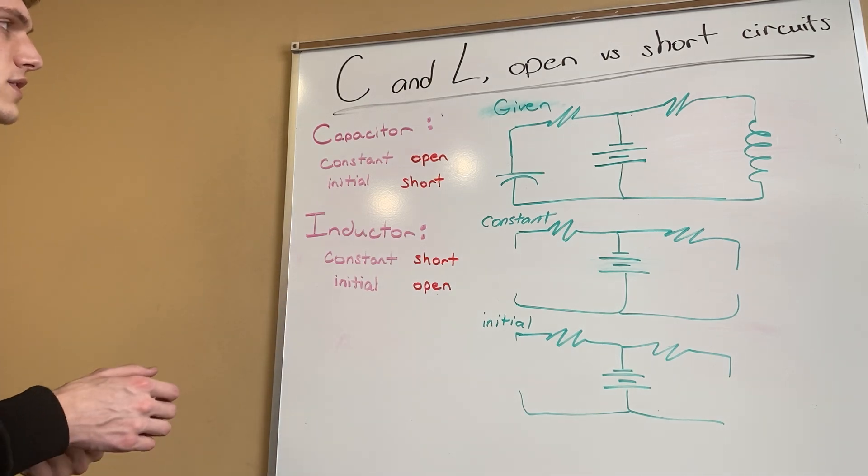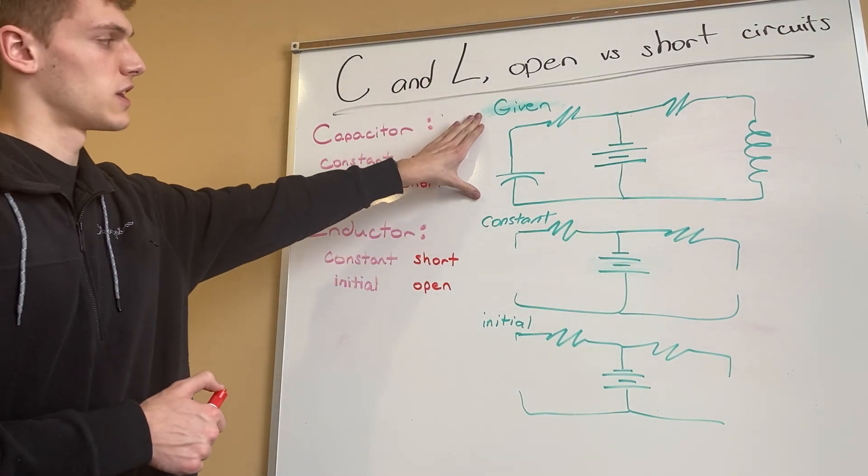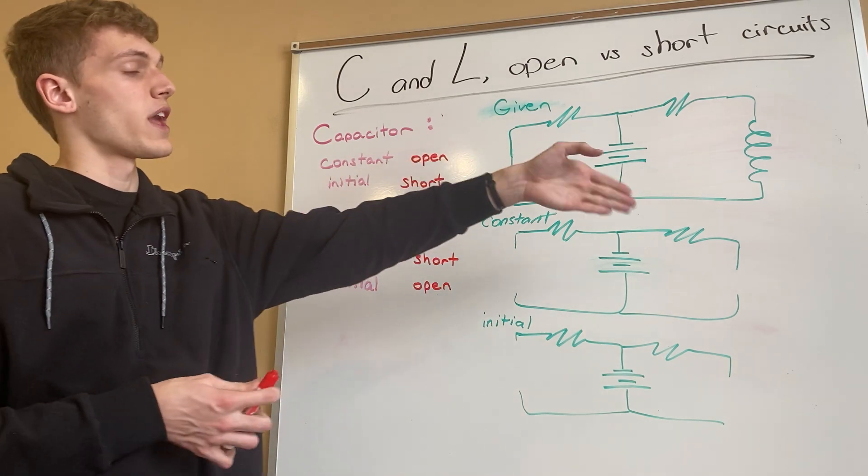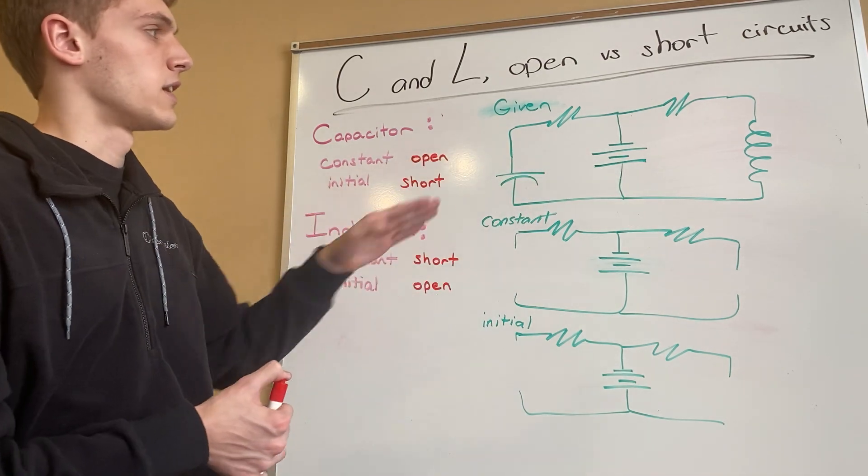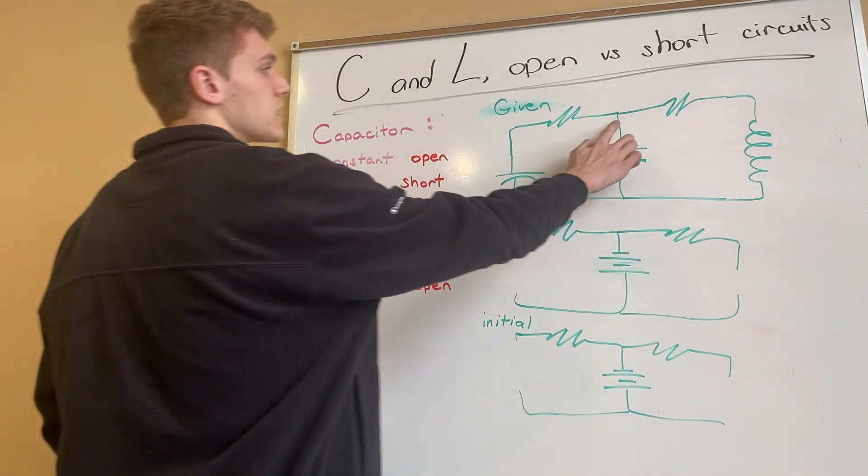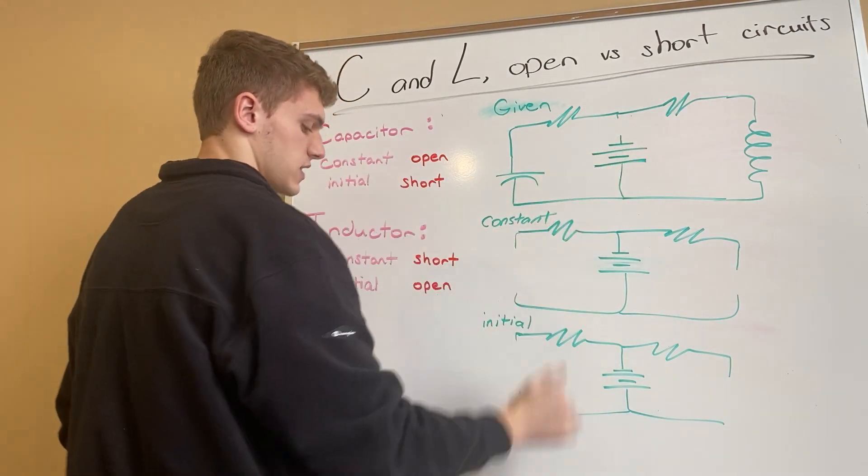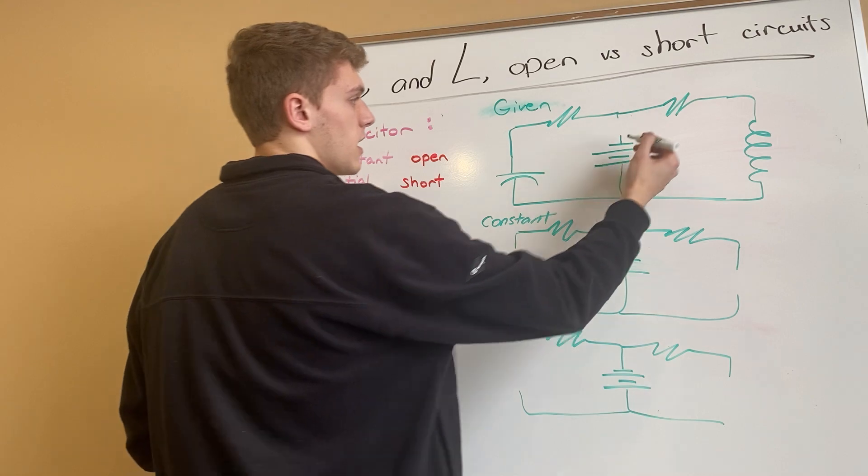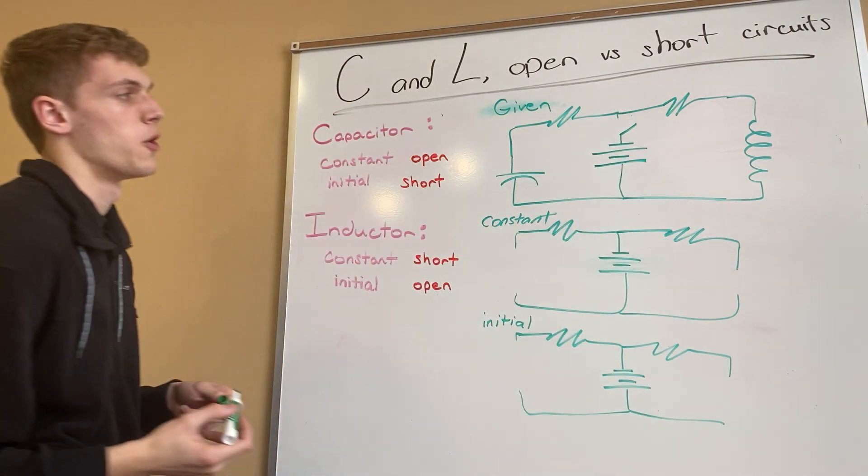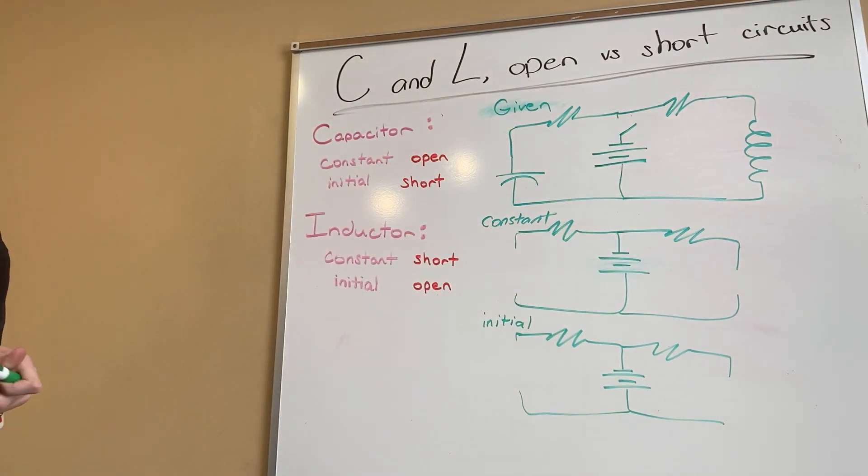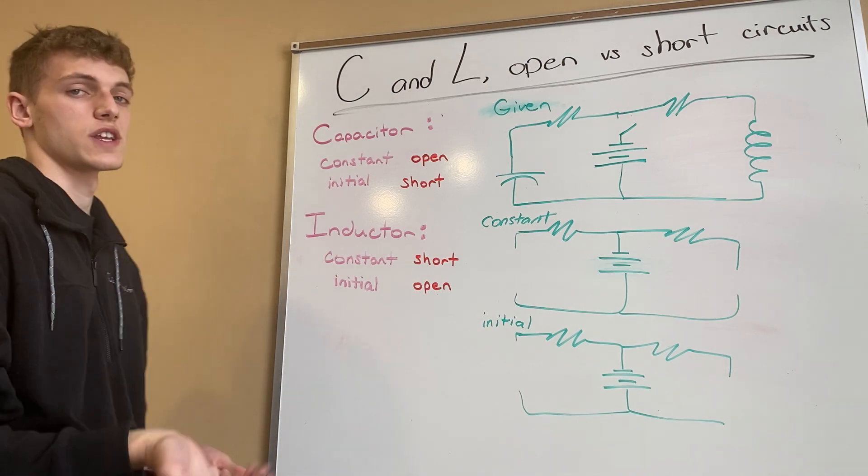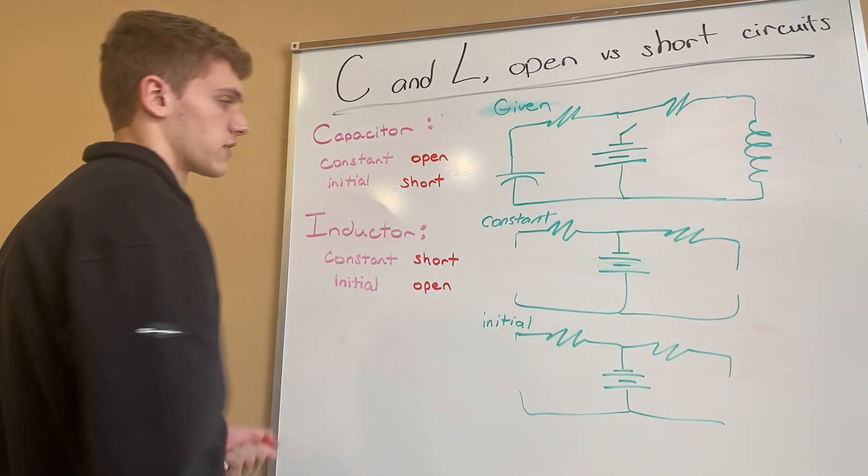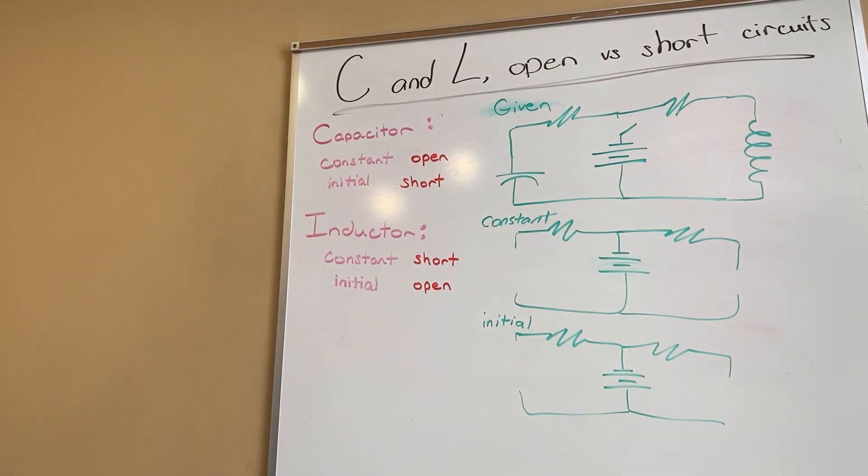So you'll often be given some type of circuit that has capacitors and/or inductors in it and you'll be told as this wire or as this connection is made, it's been open for a long time or after it is just initially closed, then you'll have to find the voltage or current at different nodes.